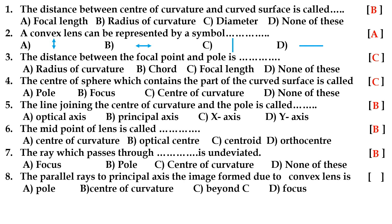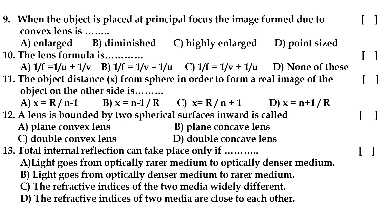Eighth bit: the parallel rays to the principal axis — the image formed due to a convex lens is at focus. Ninth question: when the object is placed at the principal focus, the image formed due to a convex lens is highly enlarged — option C.